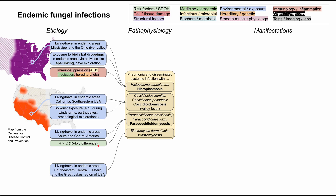Blastomycosis is associated with the southeastern United States, the central and eastern United States, and the Great Lakes region. It has a similar distribution to histoplasma — largely the eastern part of the United States — but is a little more spread out, extending more into Maine and less into Florida.